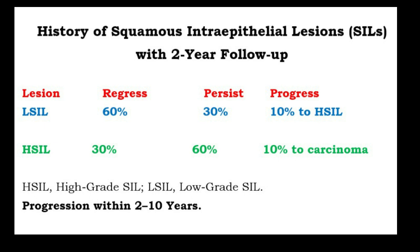This flowchart shows the natural history of squamous intraepithelial lesions. With approximately two years of follow-up: low-grade squamous intraepithelial lesions regress in 60 percent of cases, persist in 30 percent, and progress to high-grade squamous intraepithelial lesion in 10 percent. High-grade squamous intraepithelial lesions regress in 30 percent of cases, persist in 60 percent, and progress to carcinoma in 10 percent of cases.